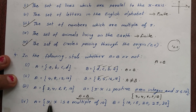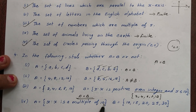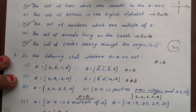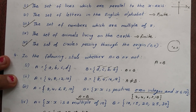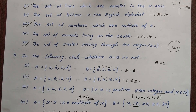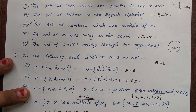A = {x : x is a multiple of 10} gives 10, 20, 30, 40, etc. B = {10, 15, ...}. Since 15 is not a multiple of 10, A is not equal to B.